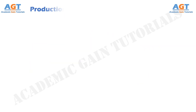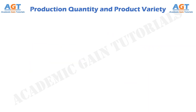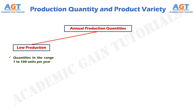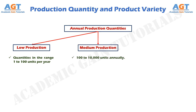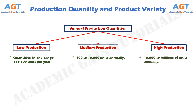The quantity of products made by a factory has an important influence on the way its people, facilities, and procedures are organized. Annual production quantities can be classified into three ranges: low production, which includes quantities in the range of 1 to 100 units per year; medium production, which ranges from 100 to 10,000 units annually; and high production, ranging from 10,000 to millions of units. The boundaries between the three ranges are somewhat arbitrary and, depending on the kinds of products, may shift by an order of magnitude.